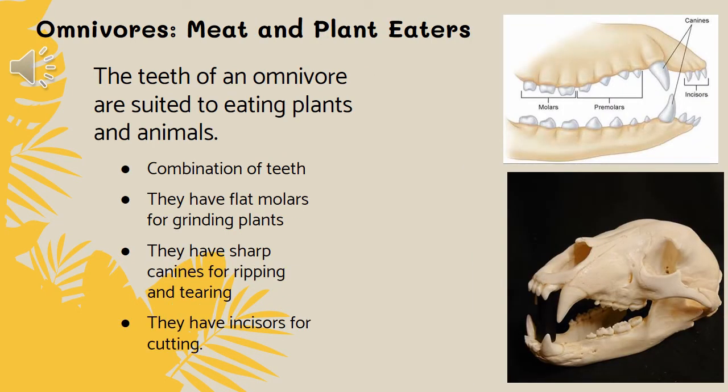The last type of teeth adaptation we'll cover would be the teeth belonging to an omnivore — an animal that eats both plants and animals. Omnivores are going to have a combination of the teeth we already talked about: flat molars for grinding, sharp canines for ripping and tearing, and incisors in the very front for cutting. So omnivores have a mouth that has all of the types of teeth.